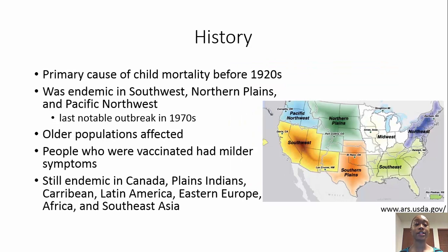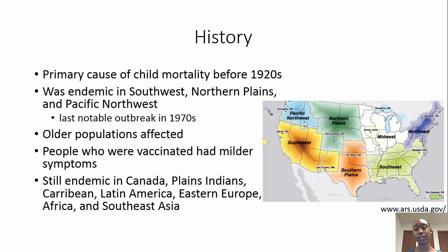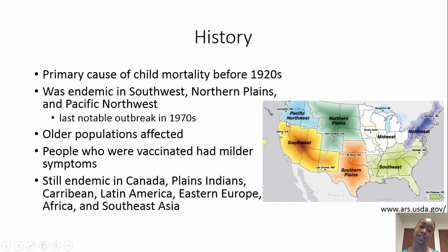As for the history of the disease, diphtheria was the primary cause of child mortality before the 1920s, which is about when the vaccine was introduced. It was very prevalent in the Northern Plains, the Southwest, and the Pacific Northwest. The last major outbreak in America was in Seattle in the 1970s, and the United States really hasn't had a major problem from diphtheria since then.